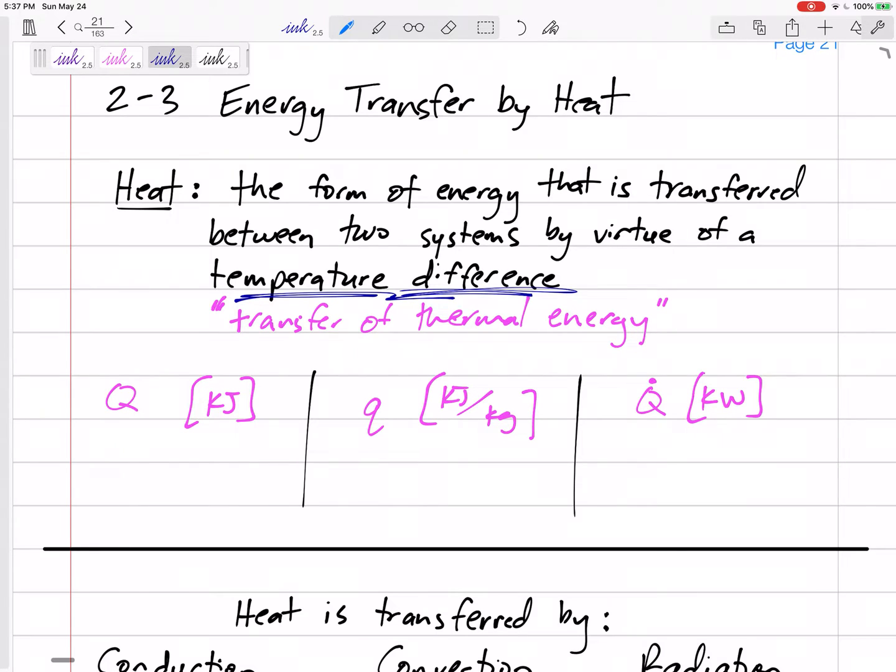If there is no temperature difference between an object and its surroundings, then it doesn't give off any heat. It doesn't transfer any energy. There is no heat if there's no temperature difference.